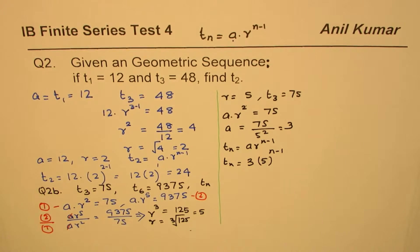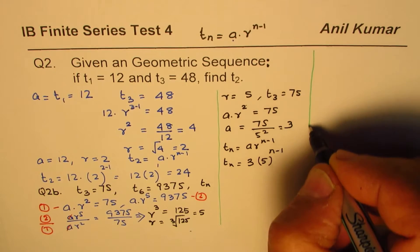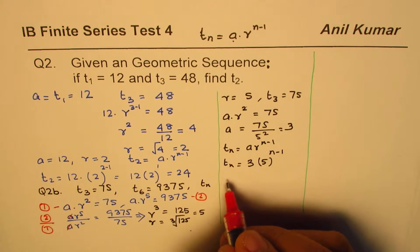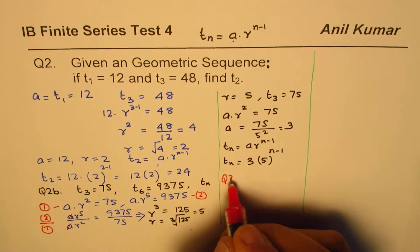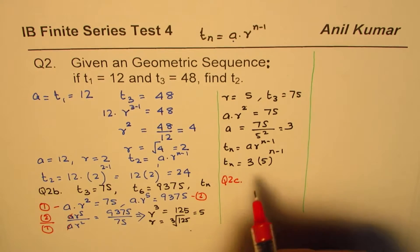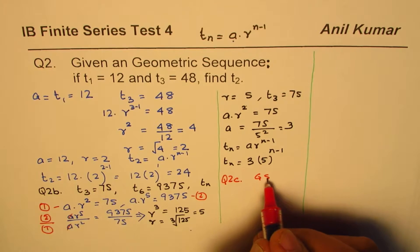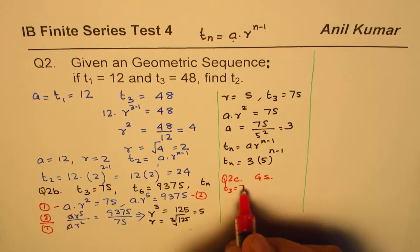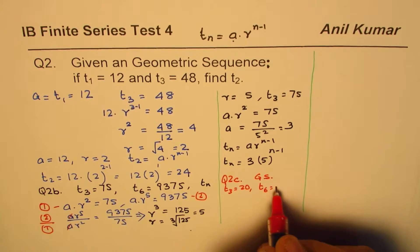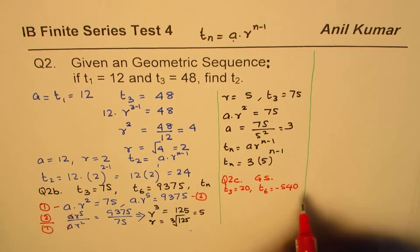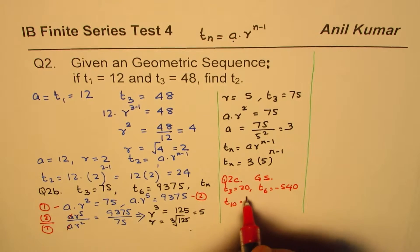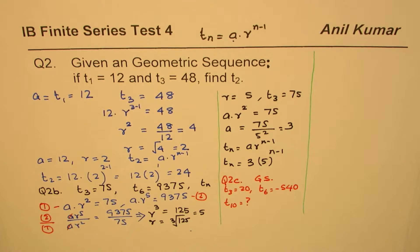That's how you solve when the first term is not given. Let me give you a practice question, question 2c: in a geometric sequence the third term is 20 and the sixth term is minus 540. Find the 10th term.